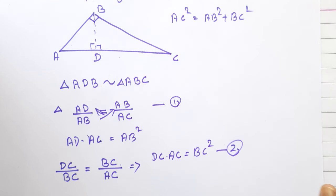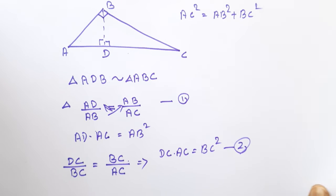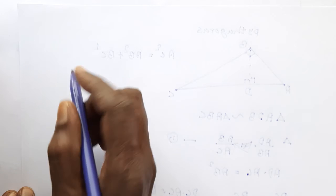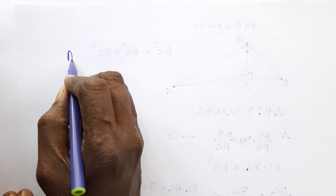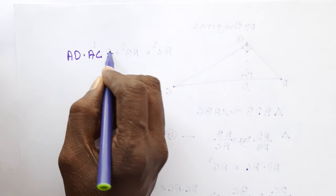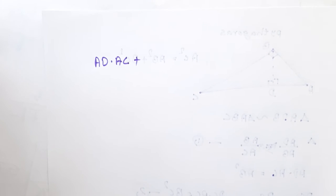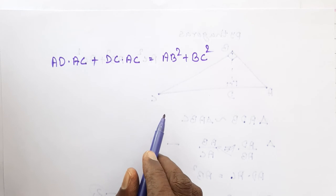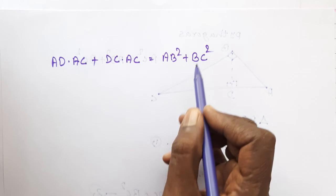So we add them, one and two. What's the result? How we add AD dot AC plus left hand side. We write both equations, one plus two equations.